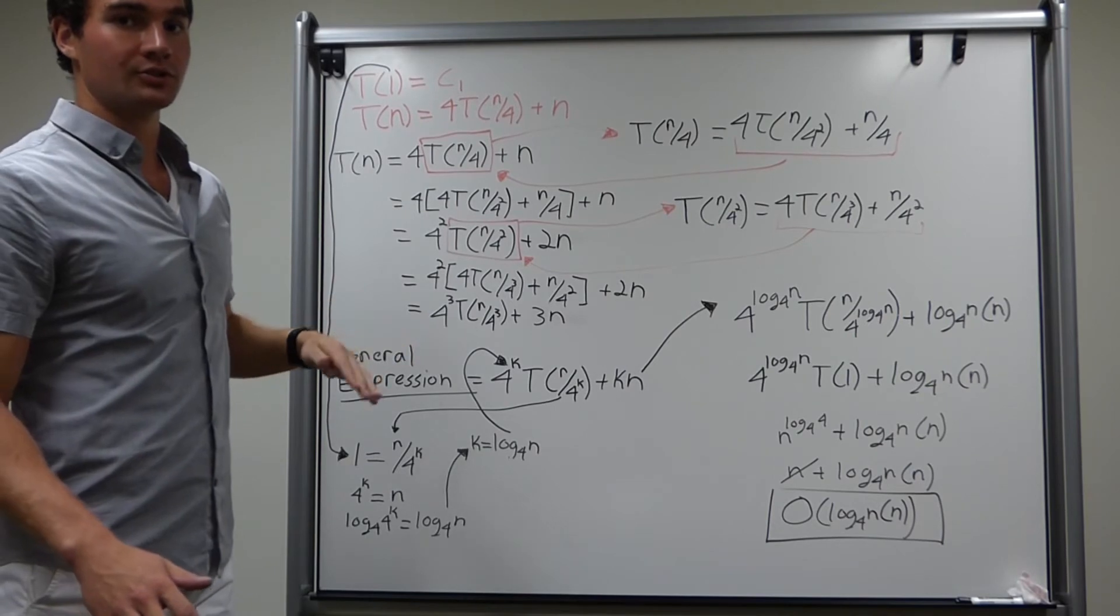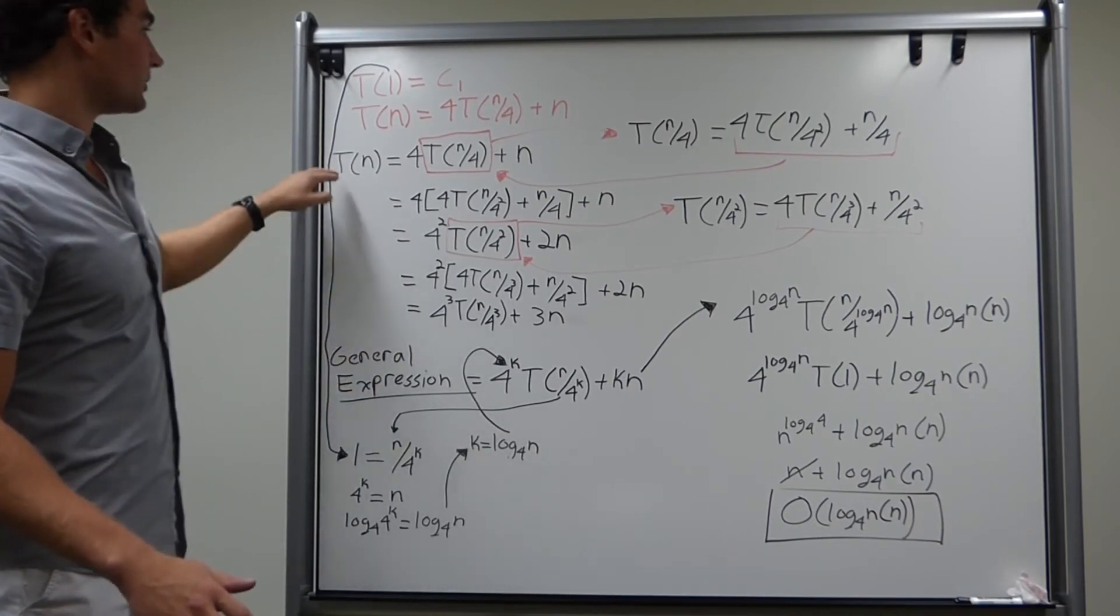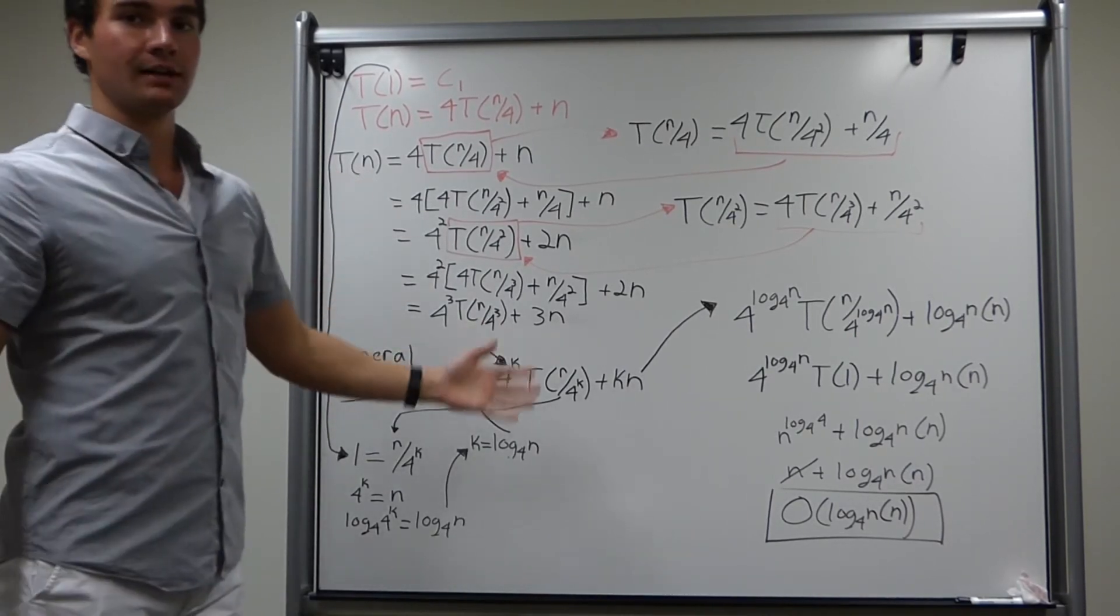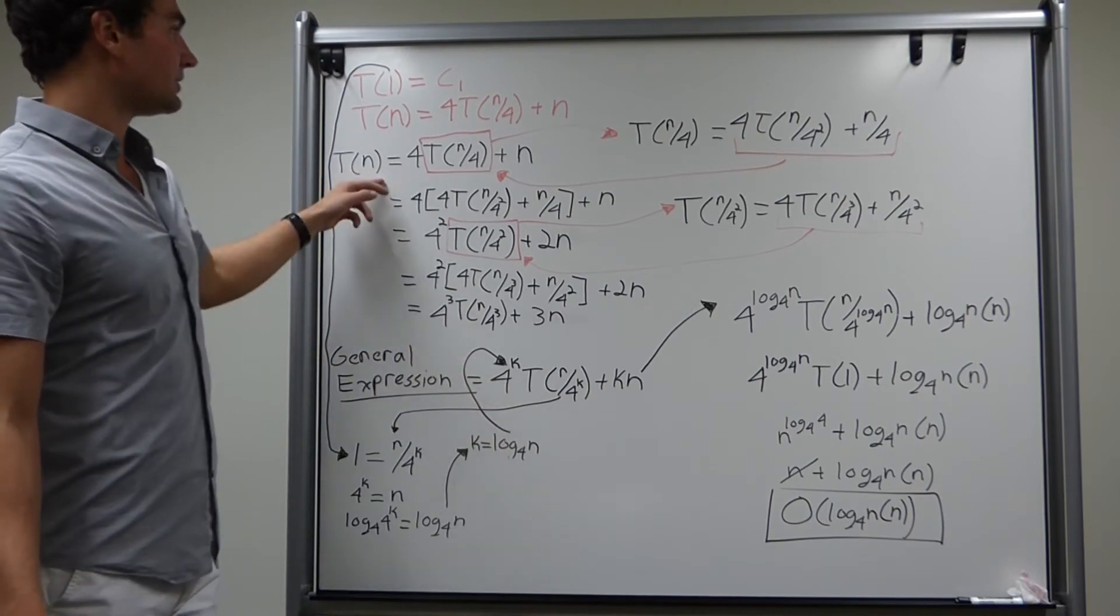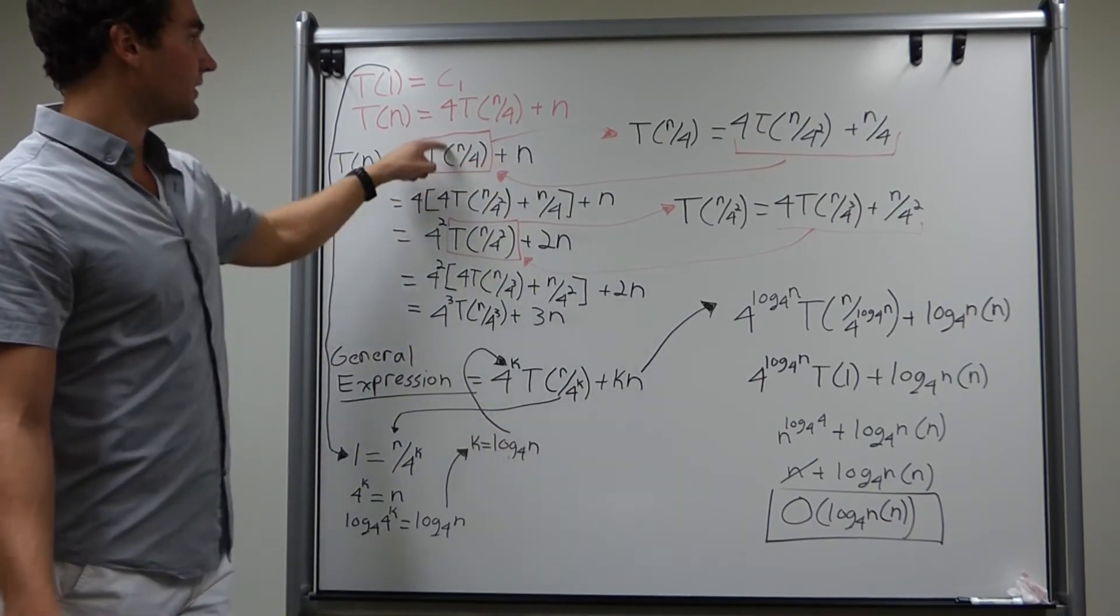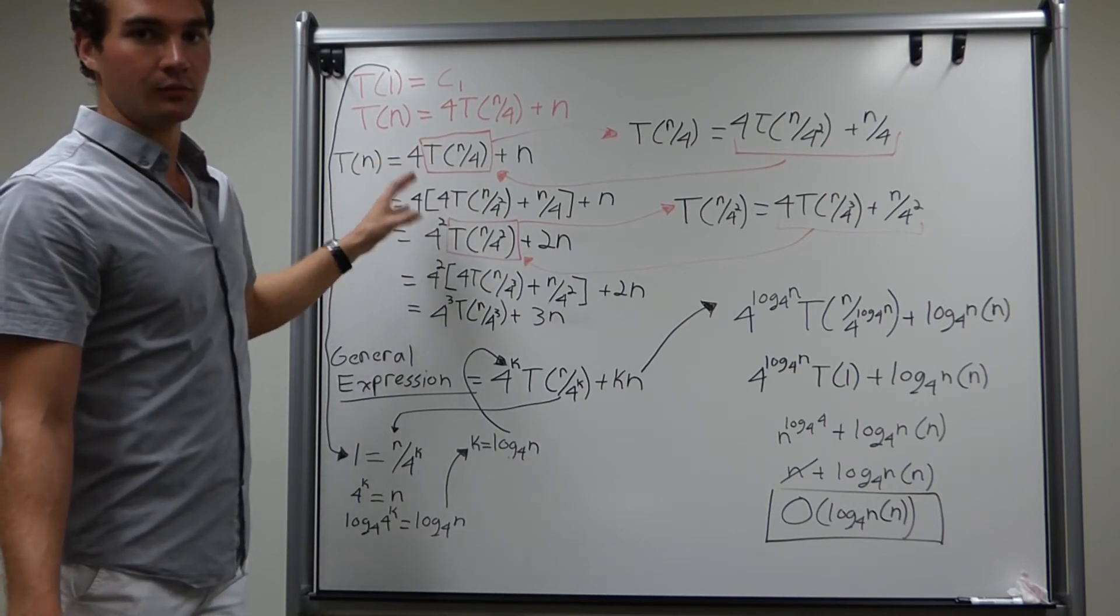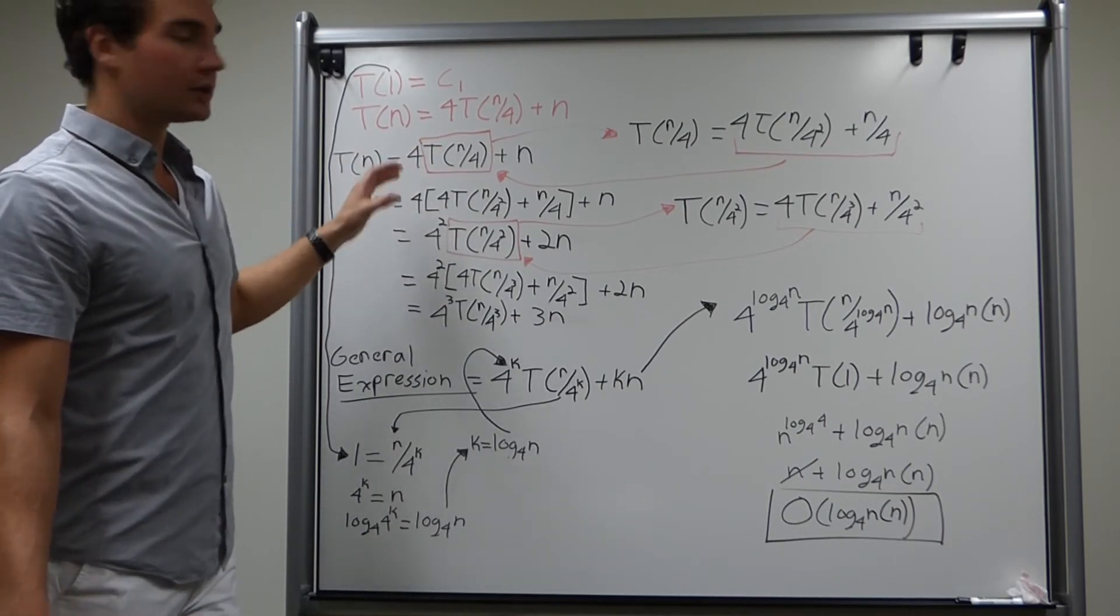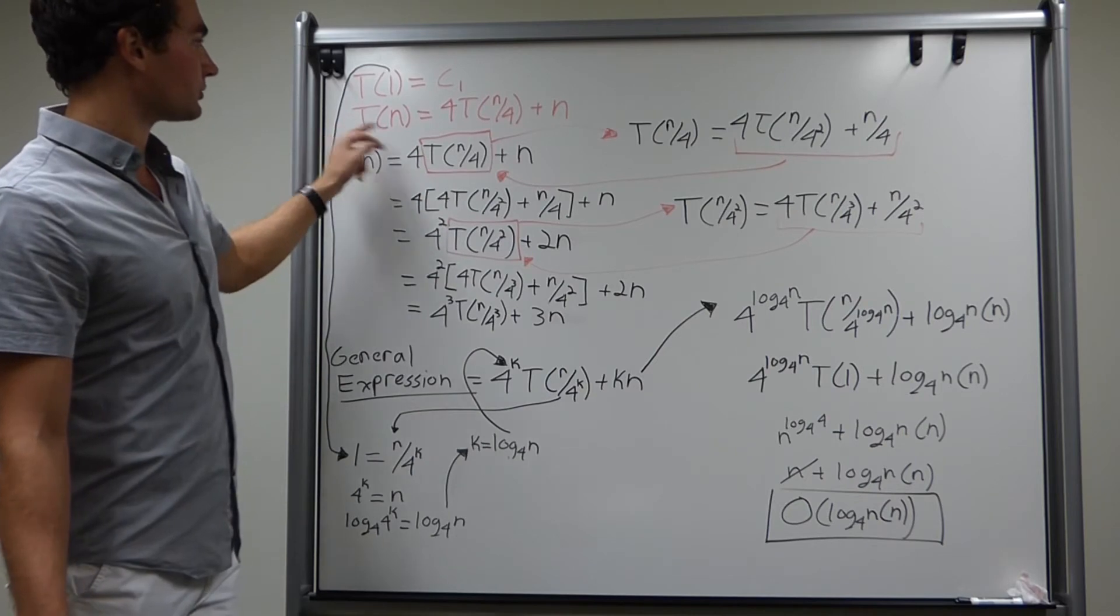Next we need to do telescoping, which is just constant substitution. We have T(n), which is the runtime for the entire program, is equal to 4T(n/4) plus n. This is the part that we want to substitute in with telescoping. How do you do it? You expand it out with this recurrence relation.